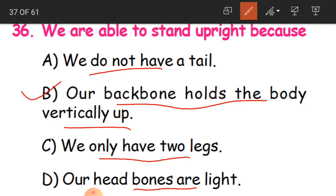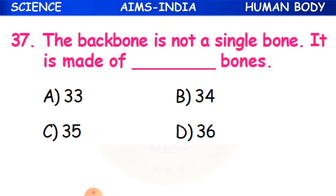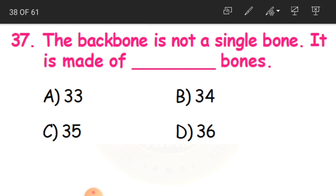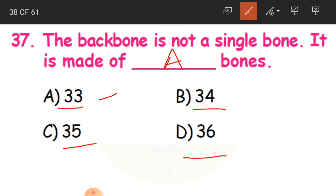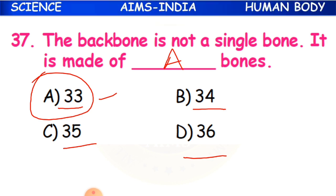Question 37: The backbone is not a single bone - it is made of how many bones? Options are 33, 34, 35, or 36. The answer is A - 33 bones. So the backbone is made up of 33 bones.